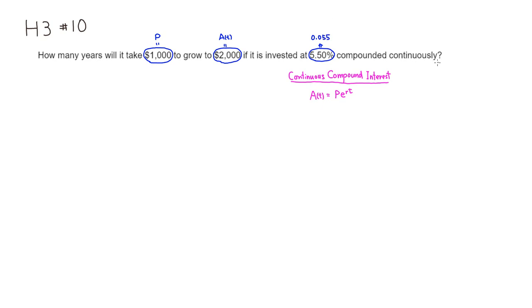And since it's continuously, we have to use this formula. So let's plug all these numbers in. So A of t is 2,000.